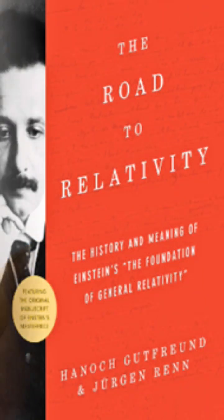The authors of this book: the first author is Professor Hannah Goodfreund from the Hebrew University, who has a PhD in theoretical physics. The other author is Professor Jürgen Renn, a German historian of science who has done extensive research on Albert Einstein.